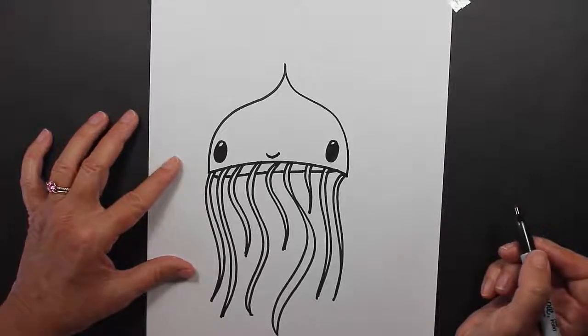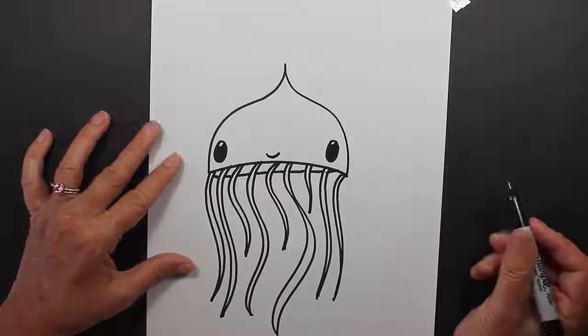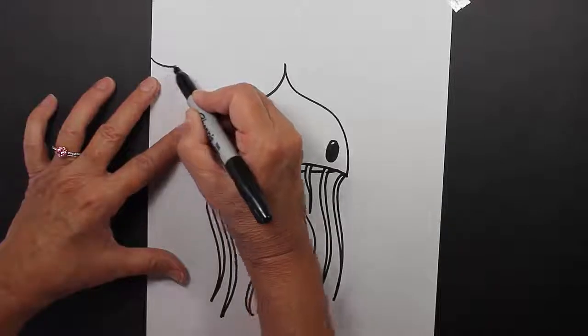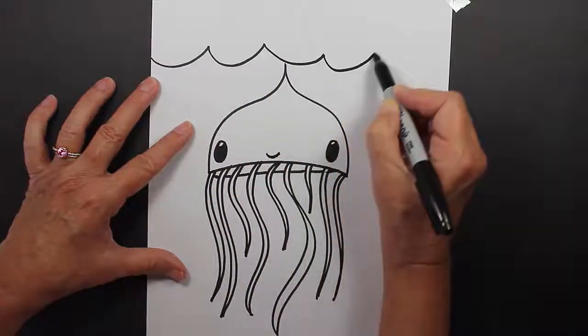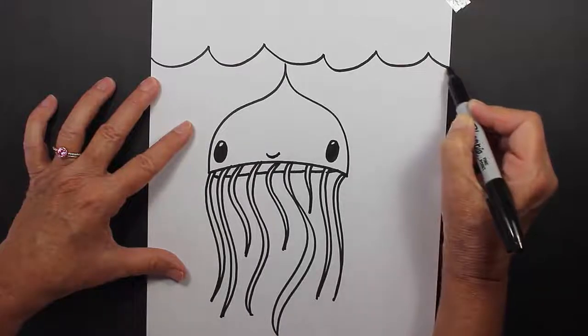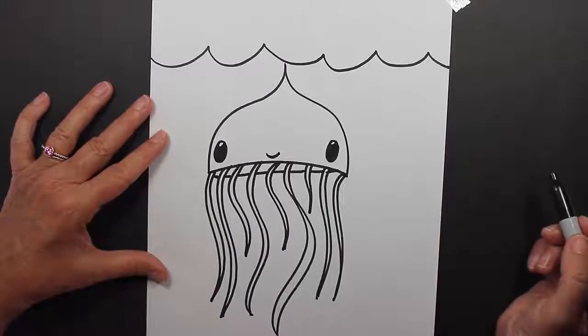Now around our jellyfish, we can create a scene, a background. Jellyfish live in the ocean, and this is how I like to make waves. If there is a different way that you'd like to make waves, go ahead and do that.